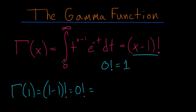So we just need to evaluate this integral when we replace x with 1. So this is equal to the integral from 0 to infinity of t to the 1 minus 1 multiplied by e to the minus t dt.